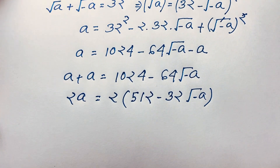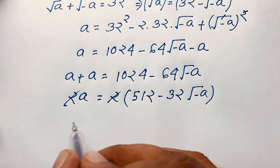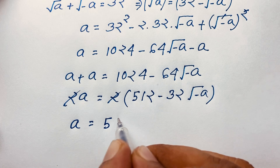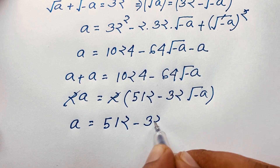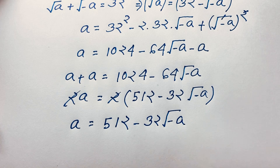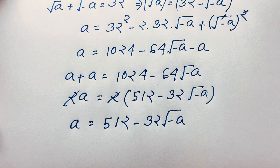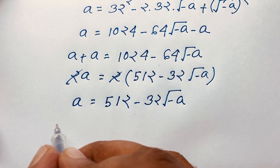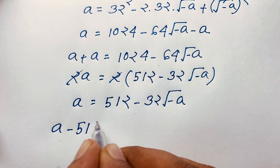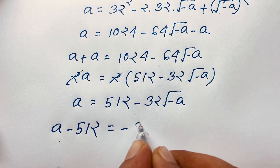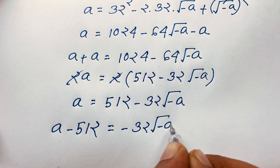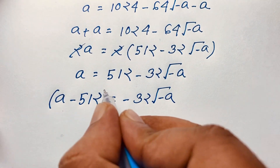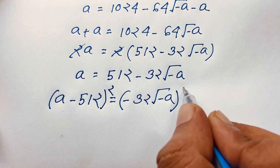If I move 512 to the other side, it will be A minus 512 equals negative 32 times square root minus A. I again use both sides whole square to eliminate the square root.